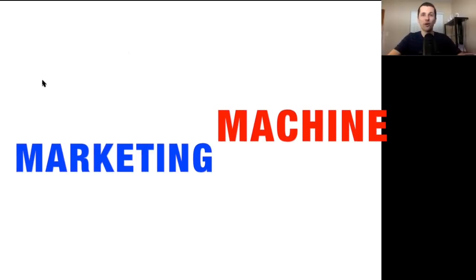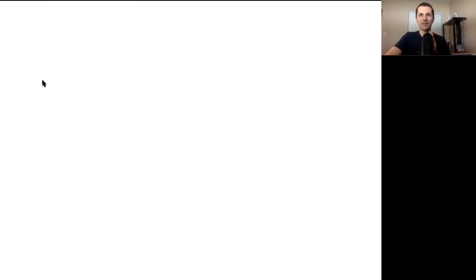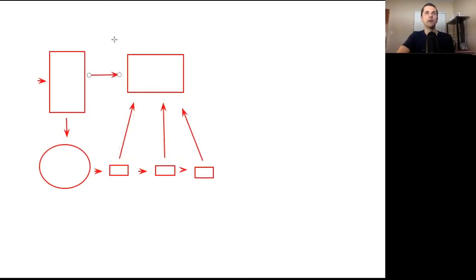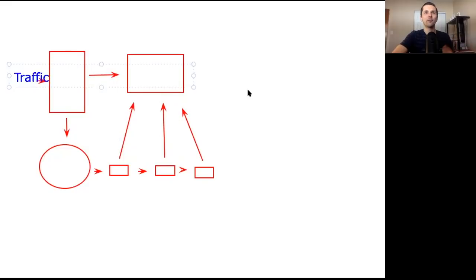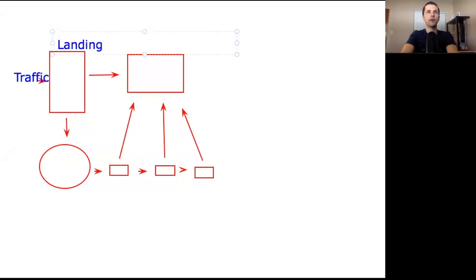So here I'm on my whiteboard, and I'm going to draw out the marketing machine exactly how I set it up. Over here would be your traffic — something you can get from social media or any paid advertising method. I'm going to show you a free advertising method at the end of this video, so stick through. This is where your traffic comes in — regular people clicking on your offer — and they go over here, which is called a landing page.